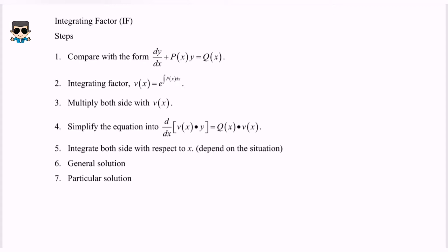Step number three: multiply both sides with the integrating factor. Step number four: simplify the equation into d/dx of the integrating factor multiplied with y, equals Q(x) multiplied with the integrating factor.